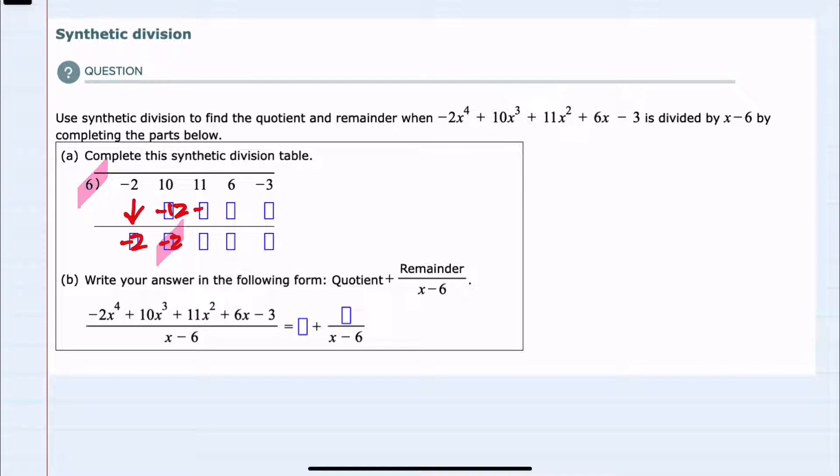We add again, this time 11 and negative 12 is a negative 1. Repeating the process: 6 times negative 1 is a negative 6. Adding gives us a 0.